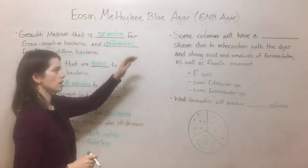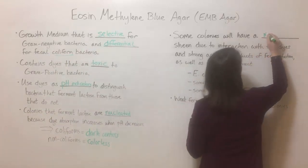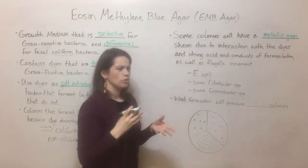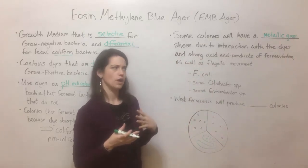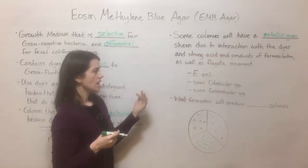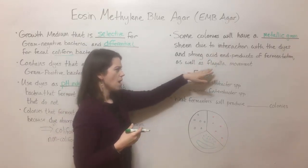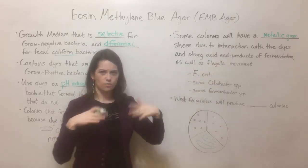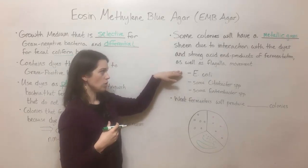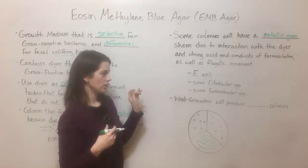Another interesting feature of EMB agar is that some colonies will actually develop a metallic green sheen — a very shiny, reflective type of green that's very distinctive. This is due to the interaction of those dyes with particularly strong acid end products of fermentation in specific types of bacteria. If those bacteria are motile and have flagella, the movement of the flagella can also contribute to that sheen. The most well-known example is E. coli, but also some species of Citrobacter and some species of Enterobacter can also show that metallic green sheen.